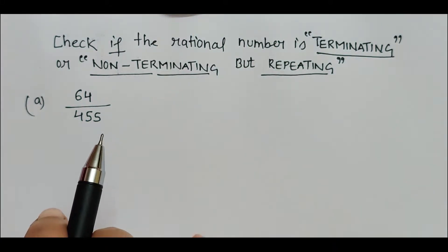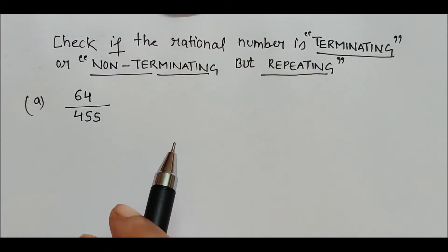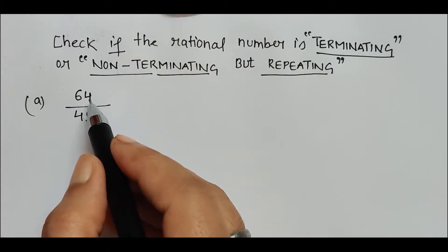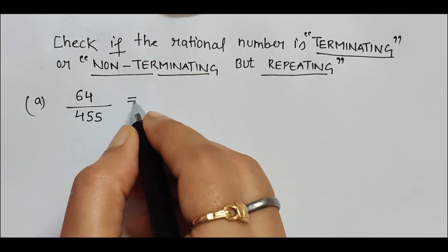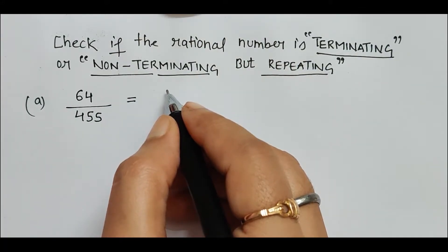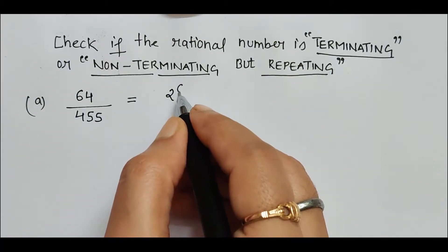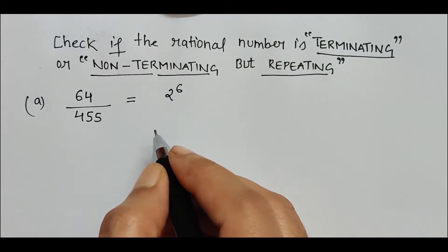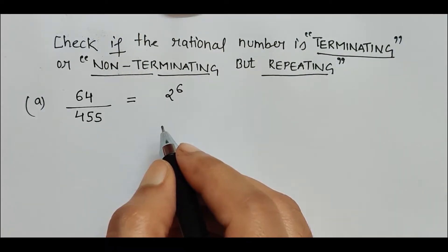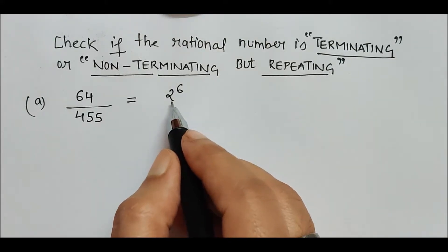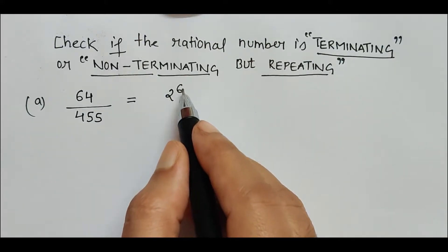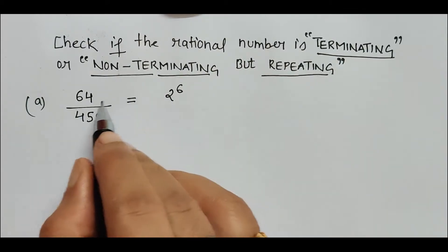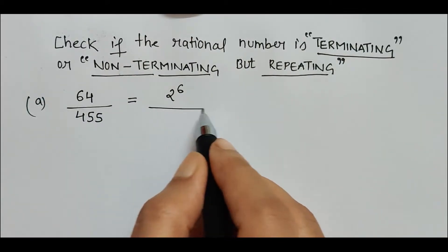Let's first prime factorize 64. 64 can be written as 8 times 8. When further split in the form of 2, it can be written as 2 to the power 6. When we find out the prime factors using the standard method we get 2 to the power 6, that means when 2 is multiplied 6 times we get 64. Likewise, when we prime factorize 455, the prime factors are 5 into 7 into 13.